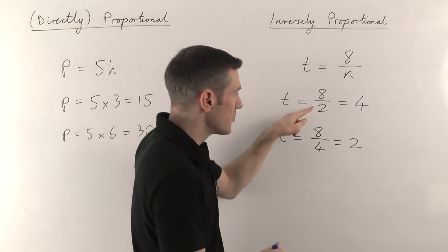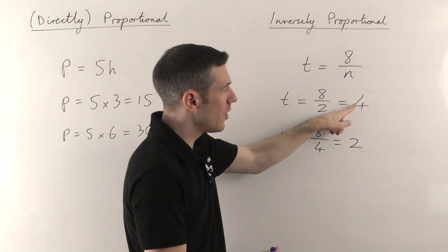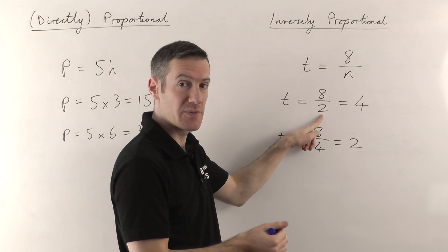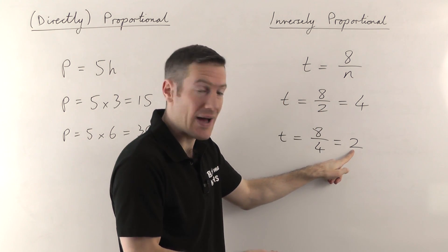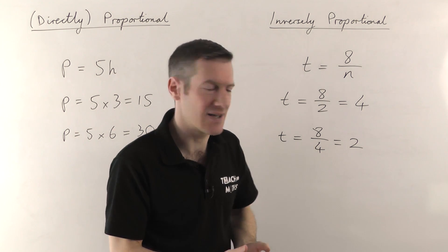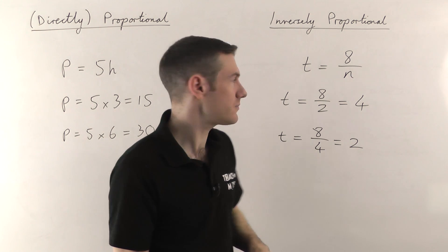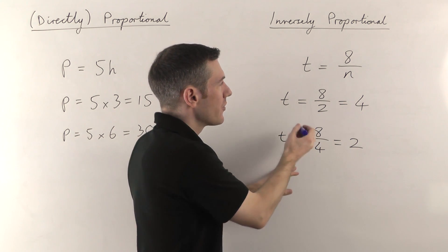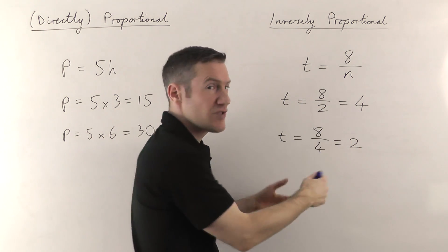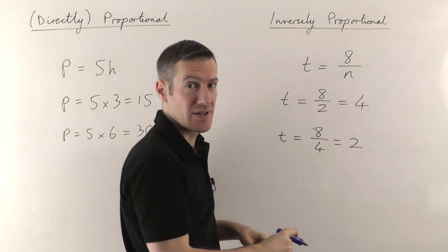So if you double the number of people from 2 to 4, you're halving the time — from four hours down to two hours. This makes sense: if you've got twice as many people doing the job, it should take half as long. And if you've got three times as many people, it would take three times less. That's what inversely proportional means.